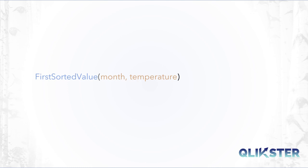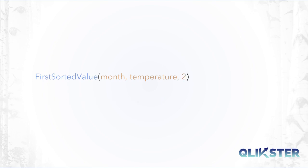Say we have two columns: month and temperature. This expression will return the month where the temperature has its minimum value, so basically the month of the lowest temperature. This expression will return the month of the second lowest temperature.